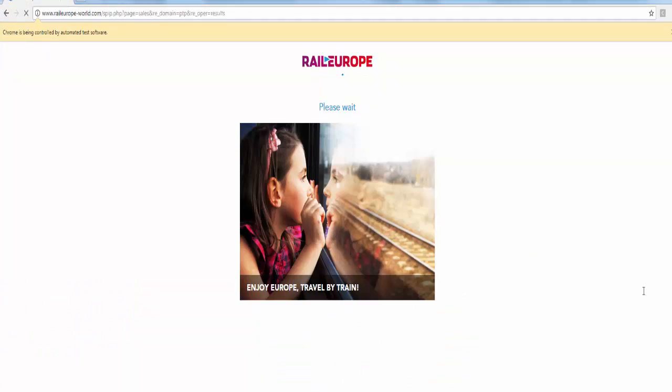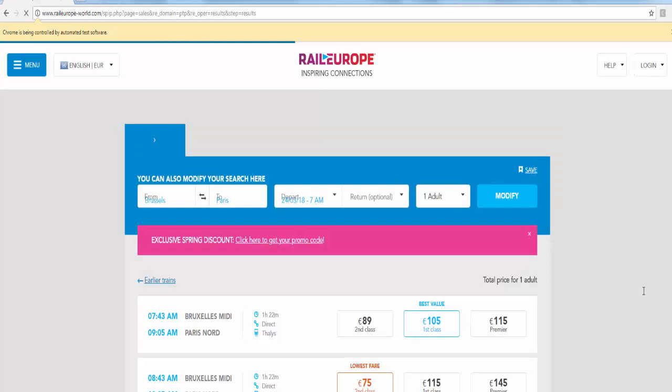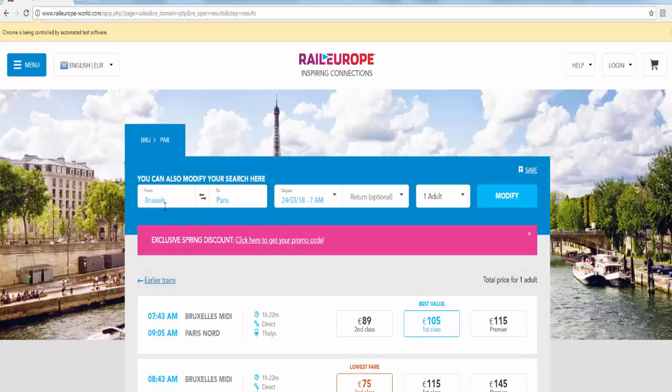And clicked on search button. That's why it is loading. For our requirement, from Brussels to Paris, we have these many trains. Hope you understood how to use the XPath locator.